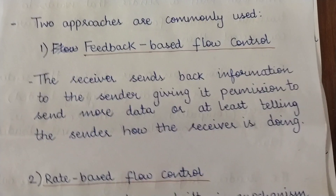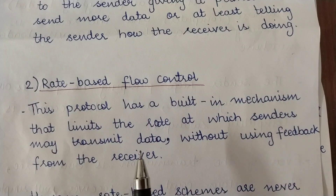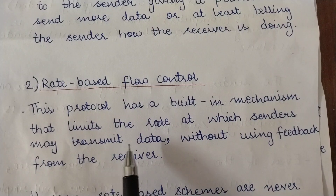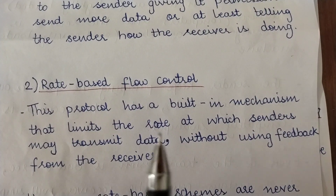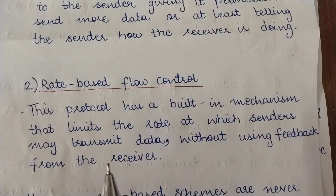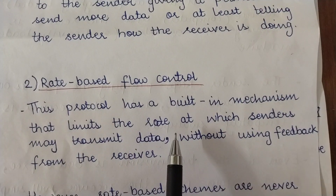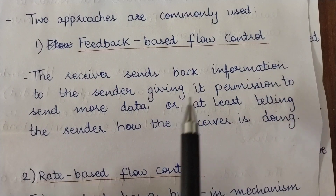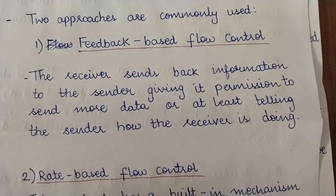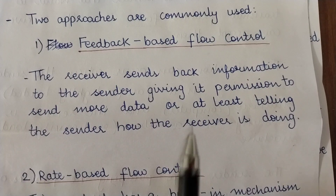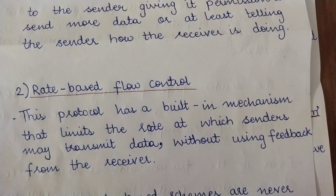In rate-based flow control, the protocol has a built-in mechanism that limits the rate at which senders may transmit data without using feedback from the receiver. You simply settle on a consistent rate of data transmission and nothing beyond that. For example, feedback-based flow control is like a teacher continuing to the next topic only based on student feedback — only proceeding when students confirm they understood the previous topic. Rate-based flow control is like agreeing to cover no more than two topics per day regardless of understanding.